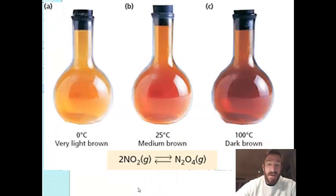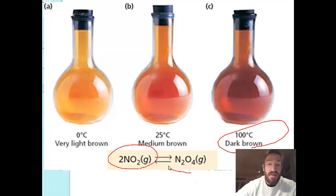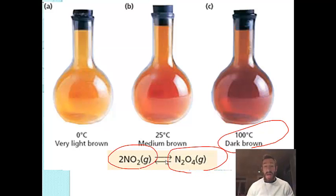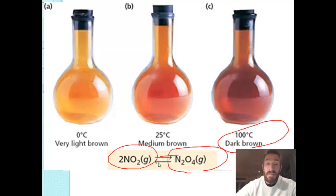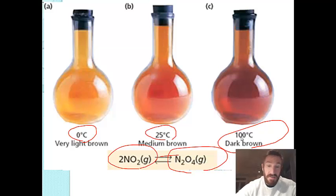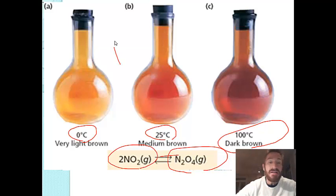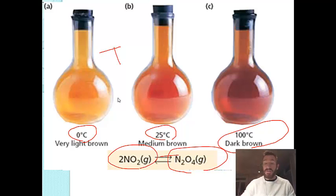Here we see nitrogen dioxide — a reddish-brown gas — and N2O4, which is colorless. One reacts to form the other and back again, and this rate can change depending on conditions. For example, at zero degrees Celsius it's a very light brown; at 25 degrees Celsius it's a little darker; and at 100 degrees Celsius it changes more significantly. This brings up the point that equilibrium is dependent on temperature — if you change the temperature, you can shift the equilibrium to have more products or more reactants.